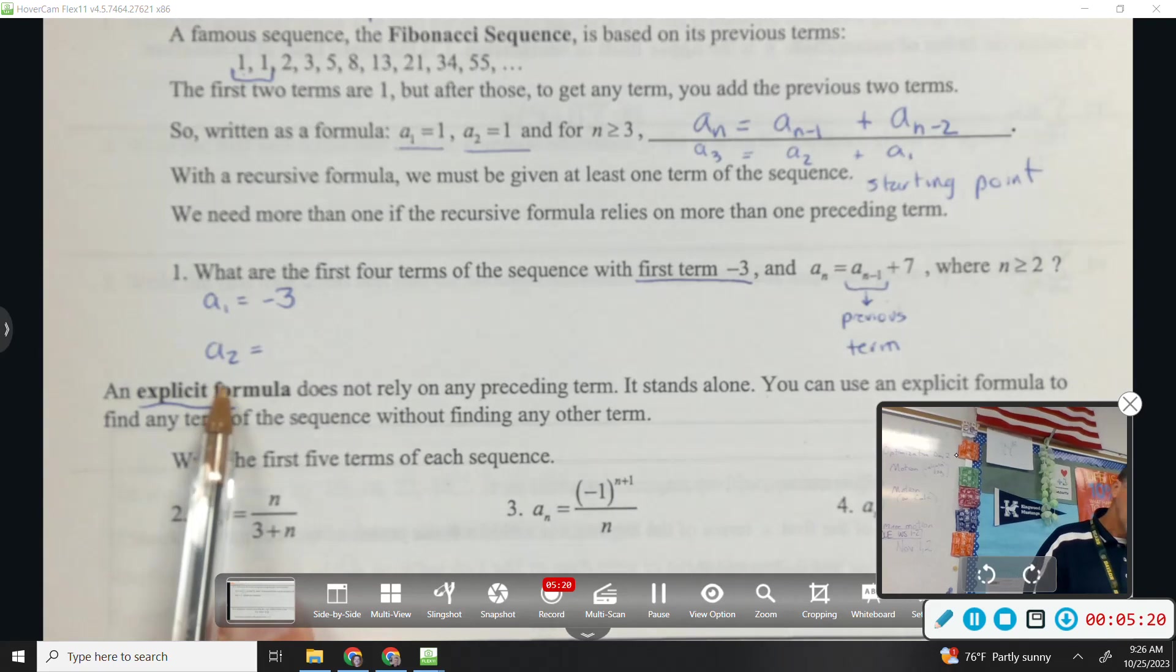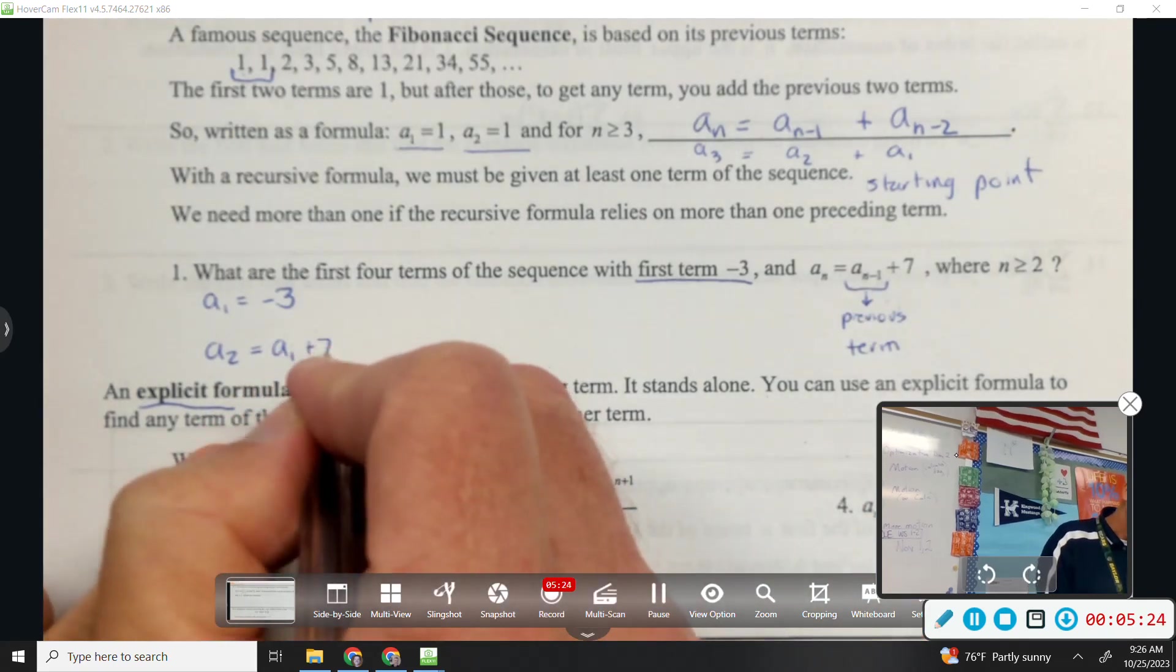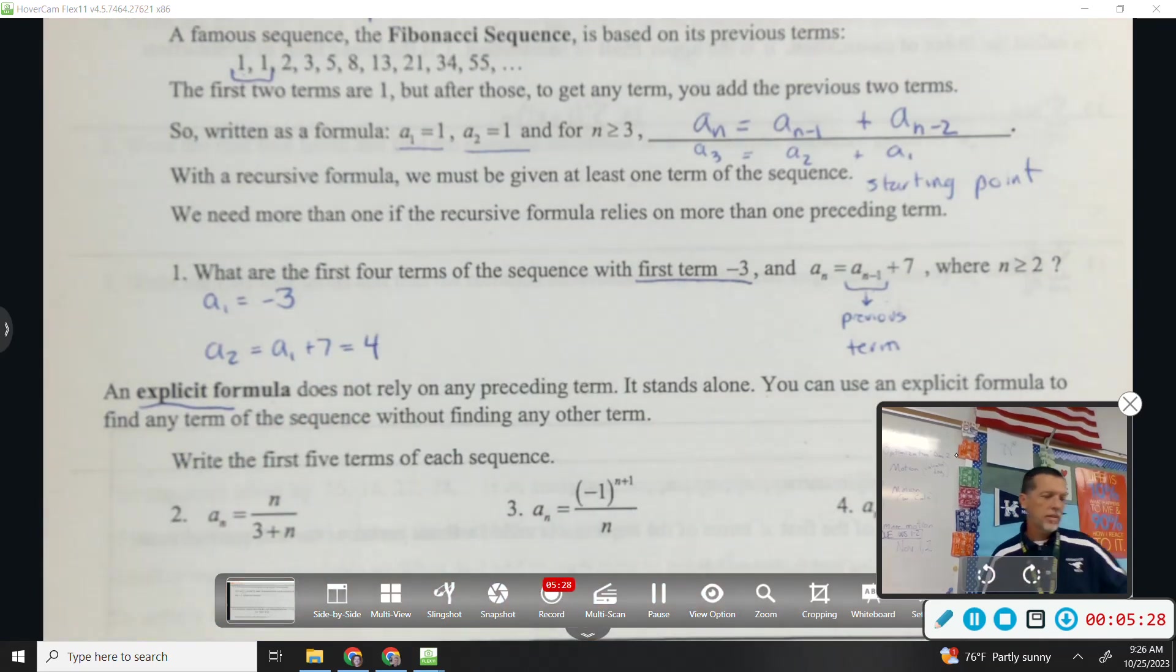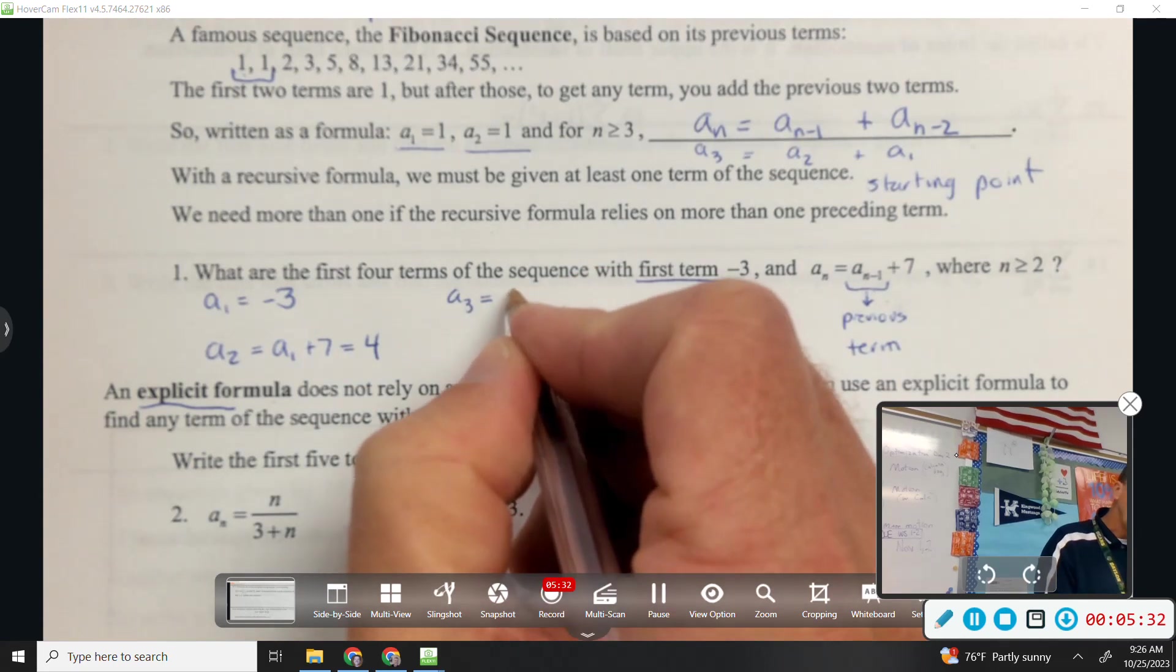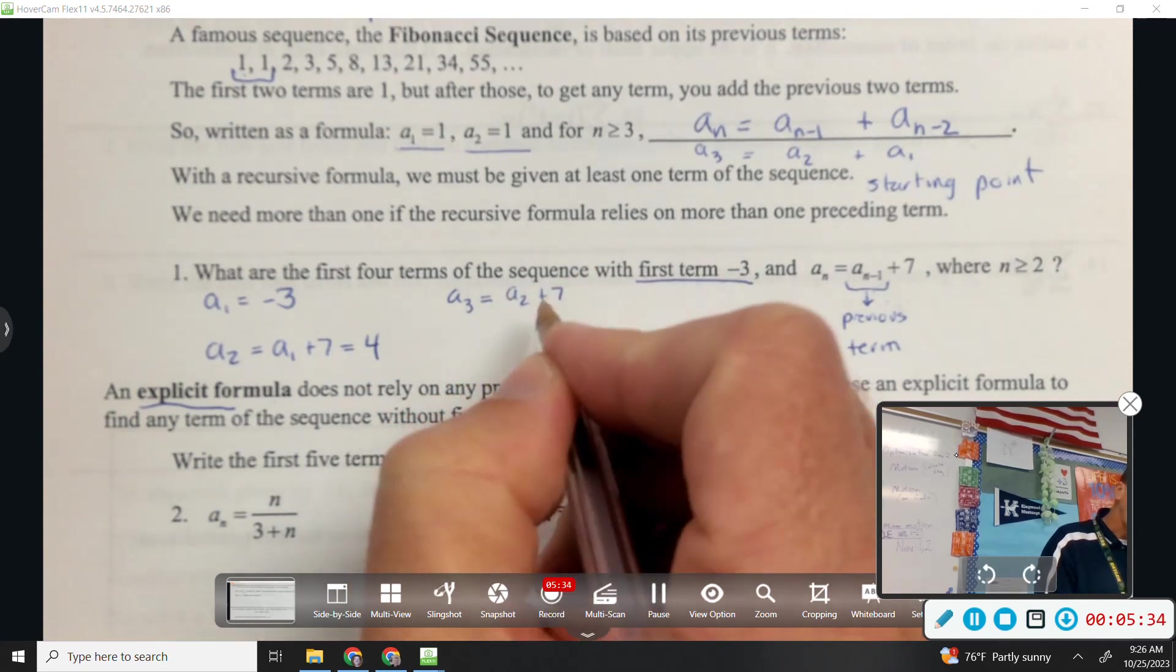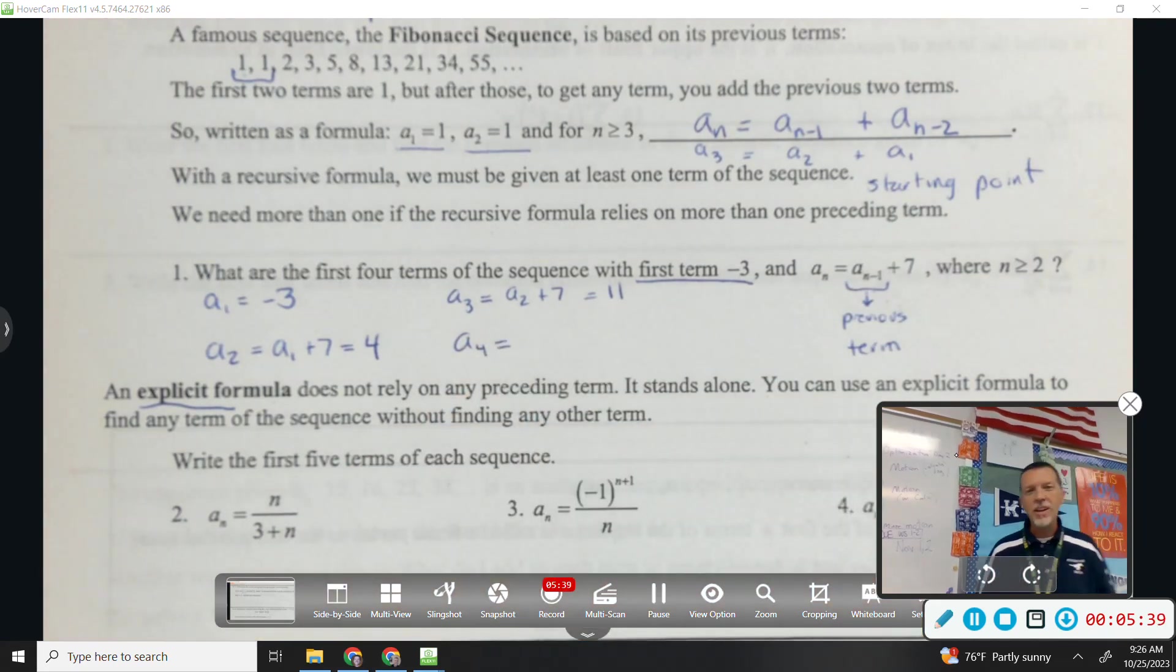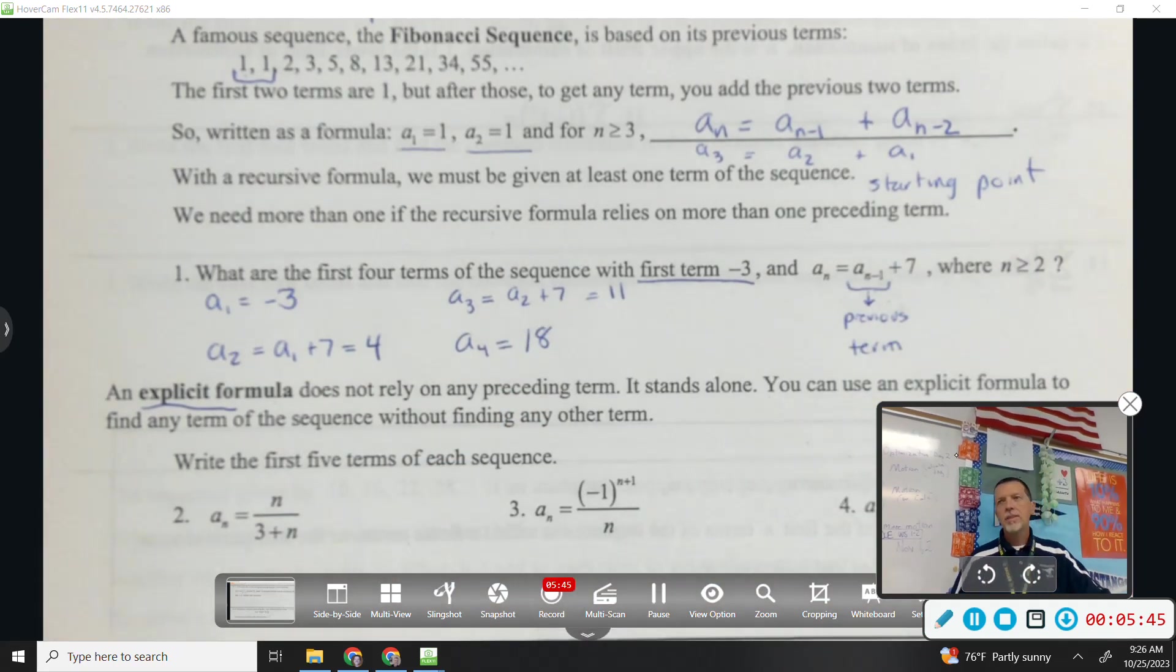So a1 is negative 3. The second term is the previous term plus 7. So that would be 4. A sub 3 would be the previous term plus 7. So 4 plus 7 is 11. And at some point you stop writing all the pieces out and you're like, oh, I'm just adding 7 every time. That's what this means. So 18. And then 25, and then 32, and on and on and on.